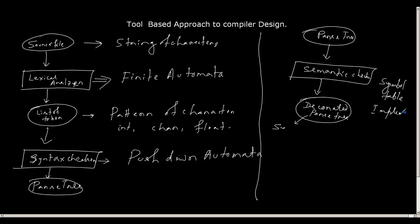There are other things involved as well, which we will discuss later, but the basic implementation is a symbol table. Can you tell me how the symbol table should look? A symbol table is nothing but a map. In C++, a map is a pair of key and value. For example, given 'int a', it is a map entry.